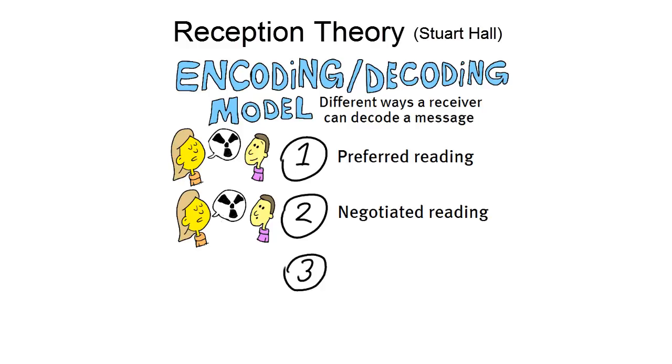A third way of decoding this message would be total rejection by Jake. He reads Rose's pamphlet, but completely disagrees, and he concludes Rose is completely wrong and doesn't deserve his vote. This is an oppositional reading.